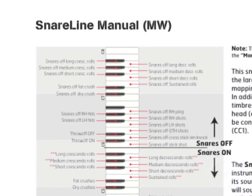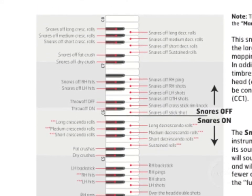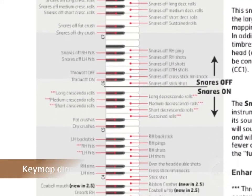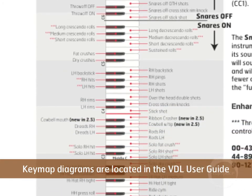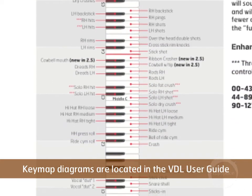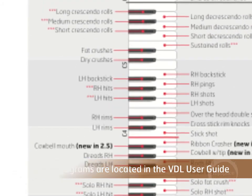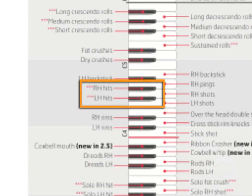You can see here I've got the VDL snare line manual mapping pulled up. There's around 75 different sounds for the snare line instrument alone, but the main two we'll be focusing on are the right and left hand hits with the snares turned on. You can see here they're mapped to G sharp 5 and F sharp 5 respectively.